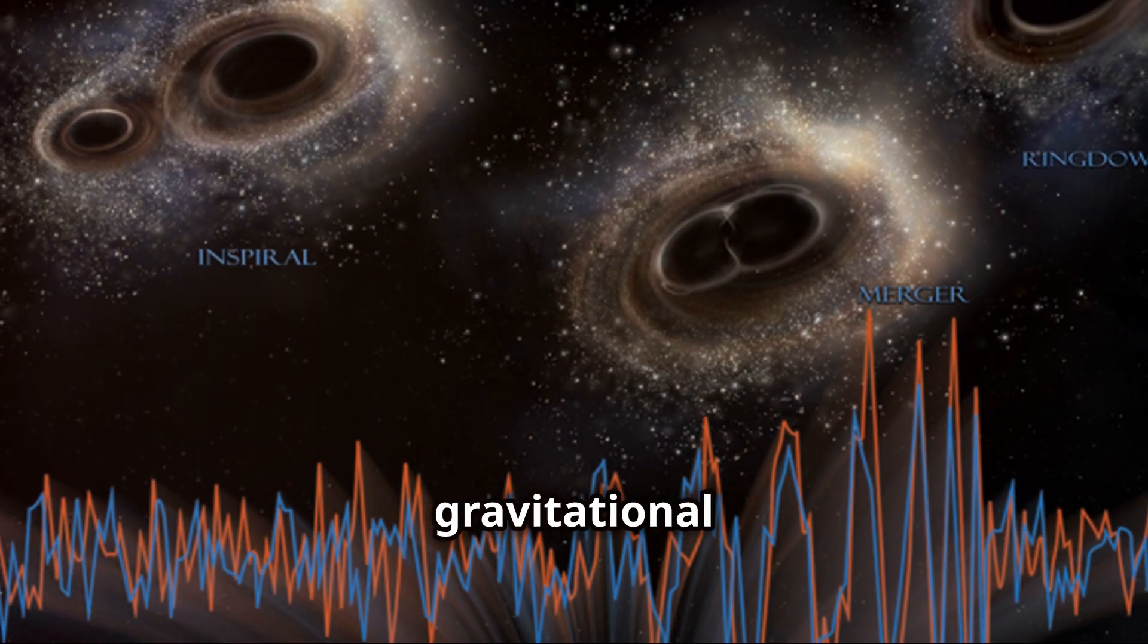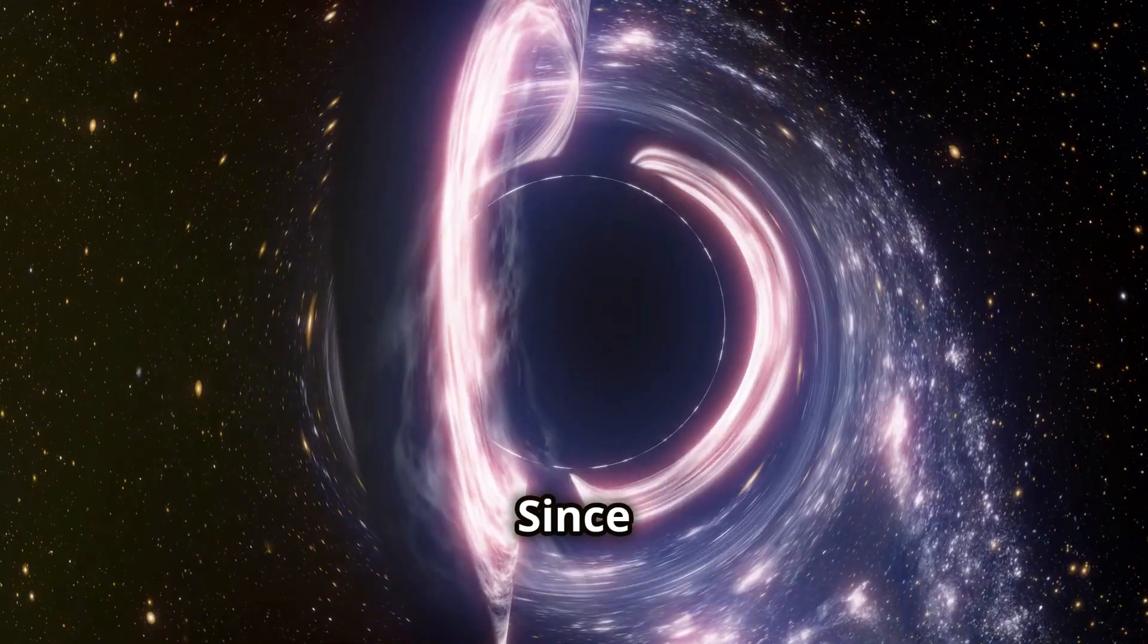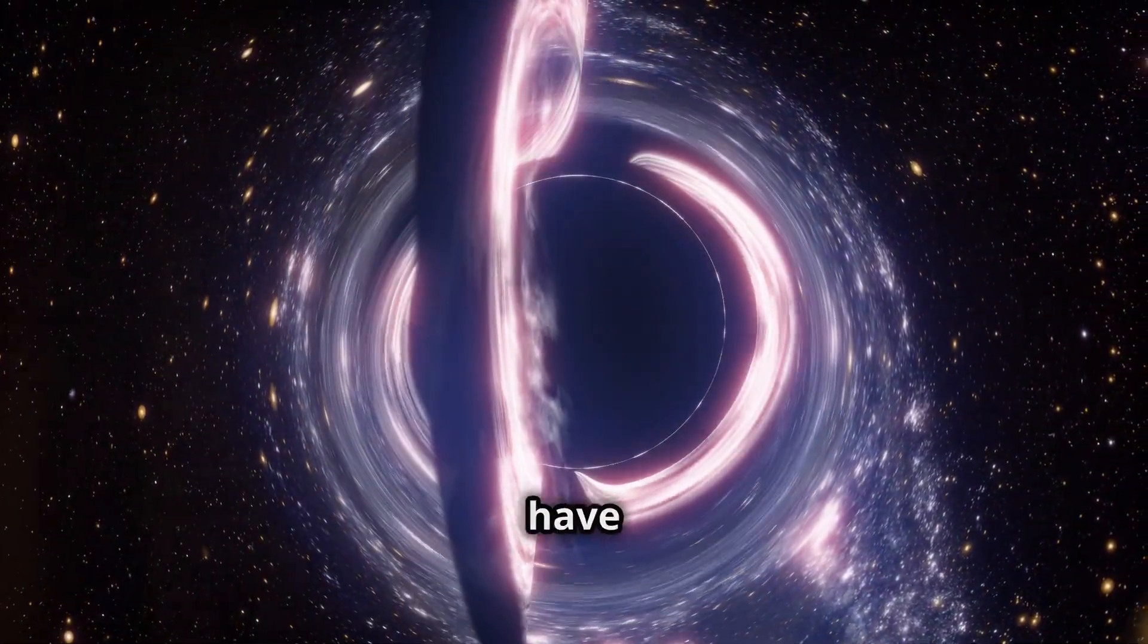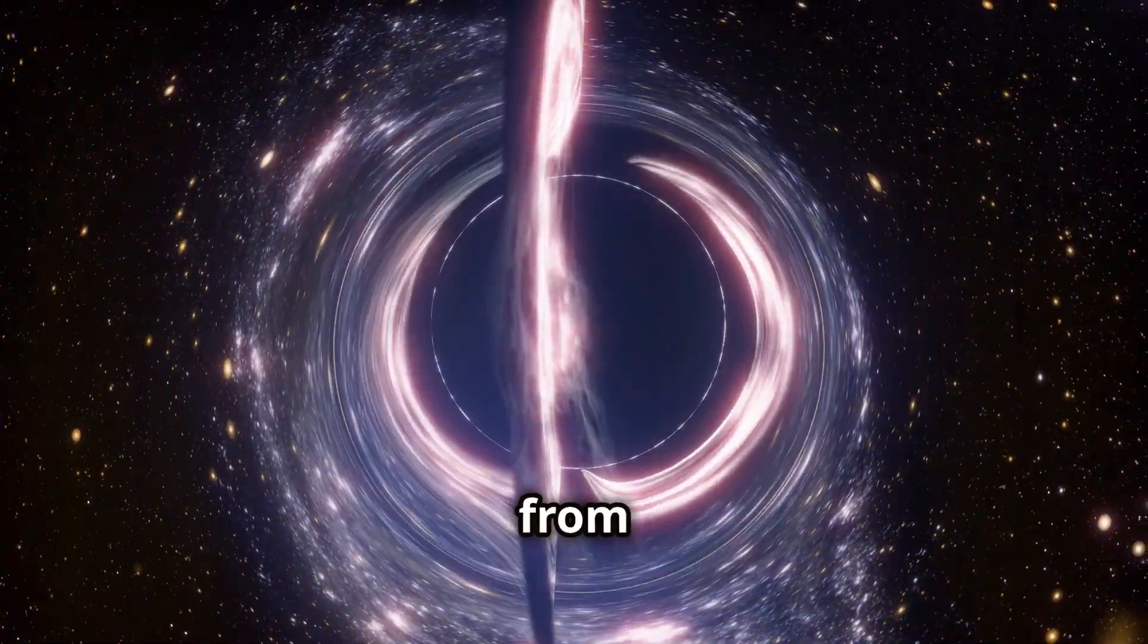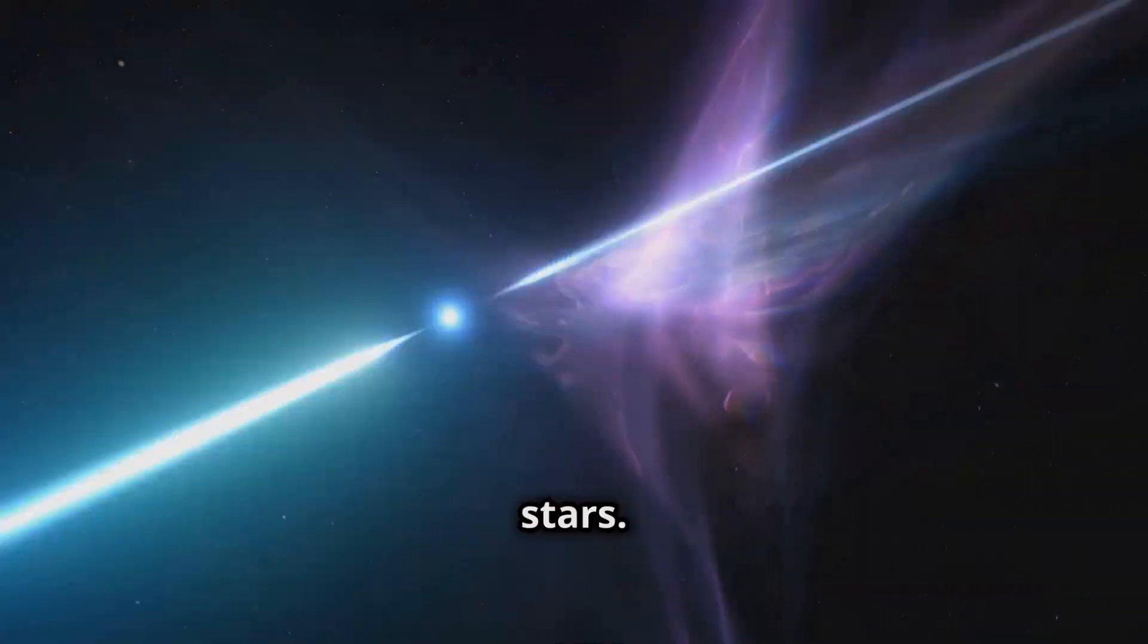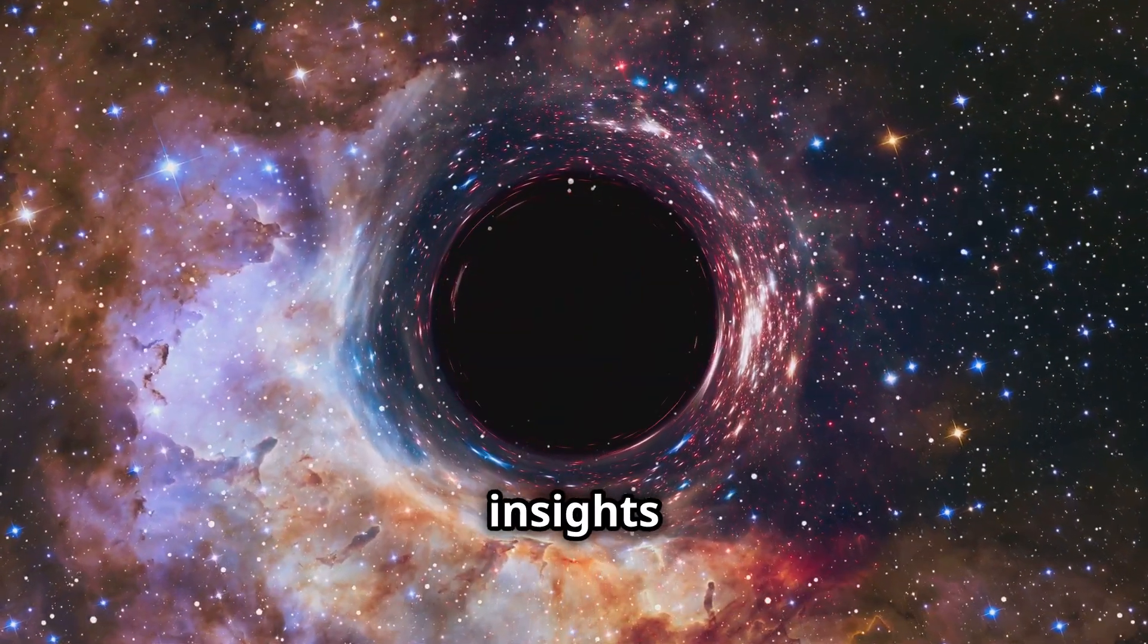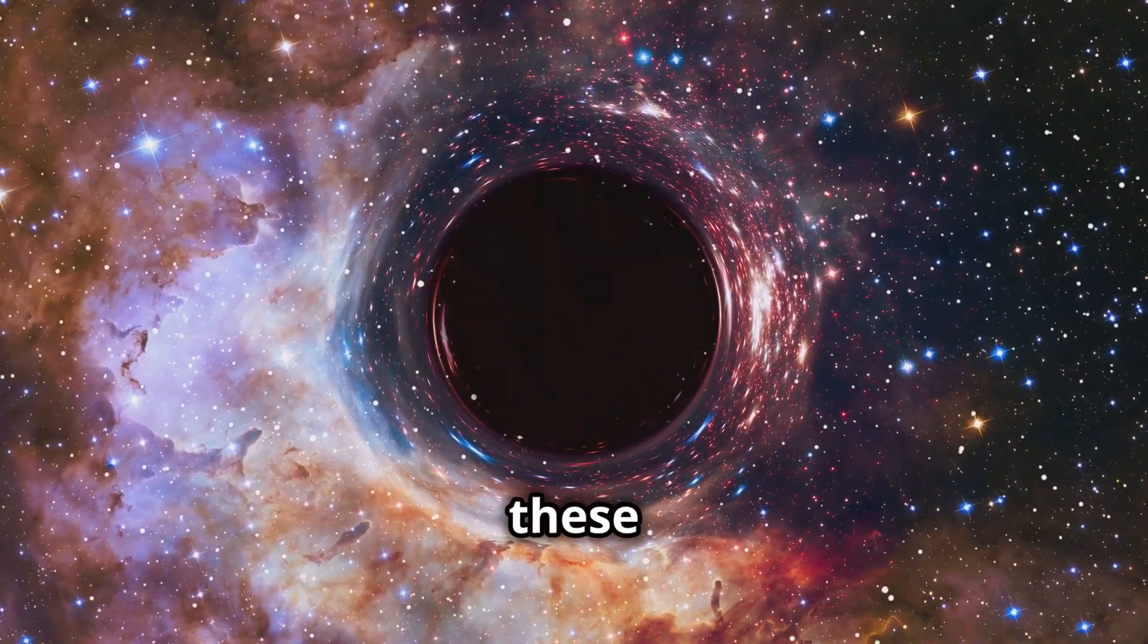The first direct detection of gravitational waves in 2015 was from the merger of two black holes. Since then, LIGO and Virgo have detected gravitational waves from several other black hole mergers and even a collision between two neutron stars. These detections have provided us with unprecedented insights into the properties and the behavior of these extreme objects.